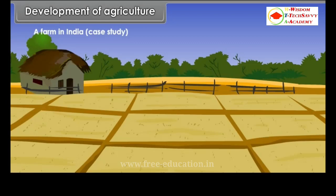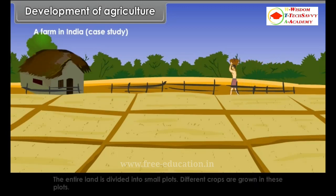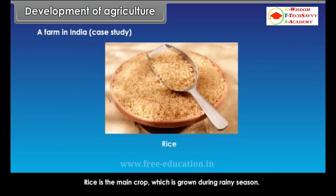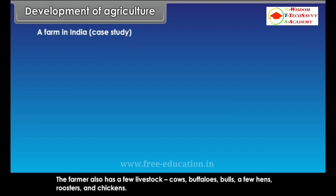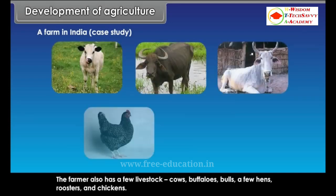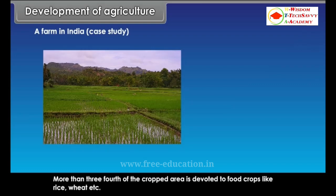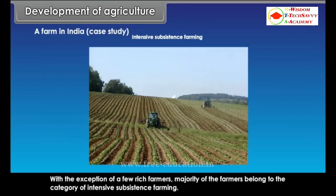In a typical Indian farm, the owner generally resides in the main village. The entire land is divided into small plots where different crops are grown. Rice is the main crop, grown during the rainy season. The farmer also has a few livestock — cows, buffaloes, bulls, hens, roosters and chickens. More than three-fourths of the cropped area is devoted to food crops like rice and wheat. With the exception of a few rich farmers, the majority belong to the category of intensive subsistence farming.